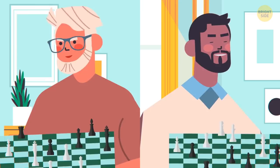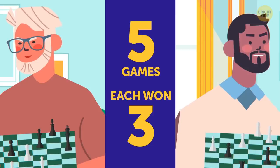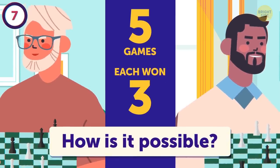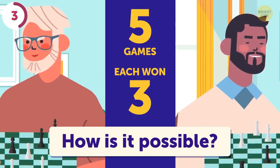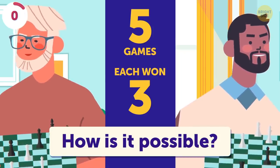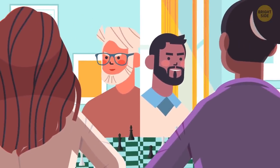Two men were playing chess. They'd already played five games, and each man had won three of them. How is it possible? The men were playing with different opponents, not with each other.